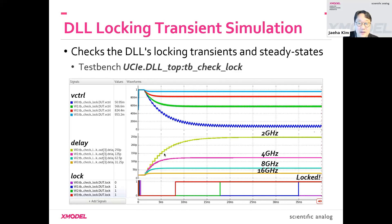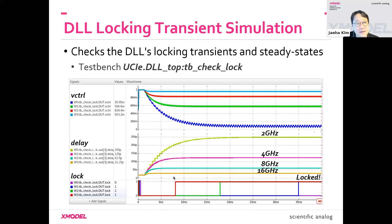At all those frequencies, the DLL successfully reaches its locking point. The speed at which they reach the locking point differs because the bandwidth scales with frequency.